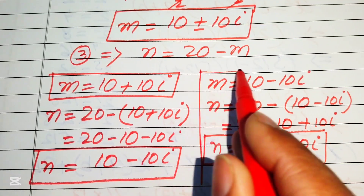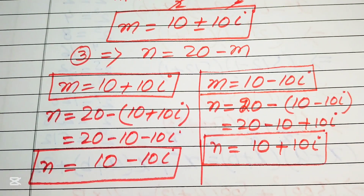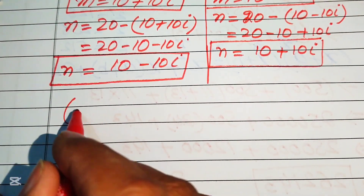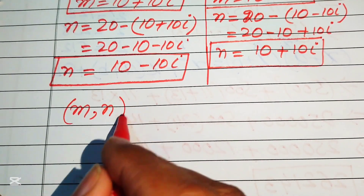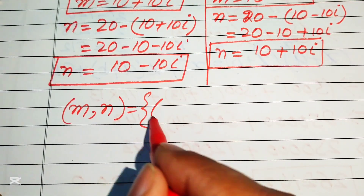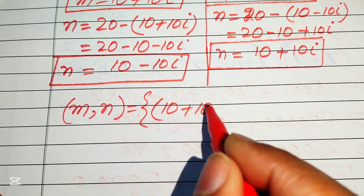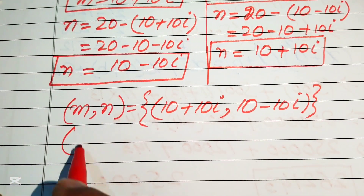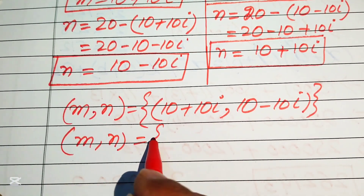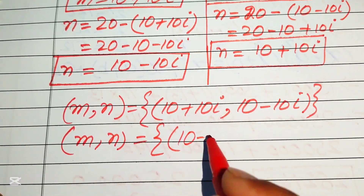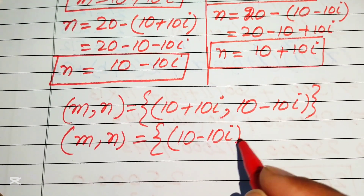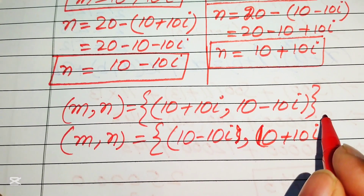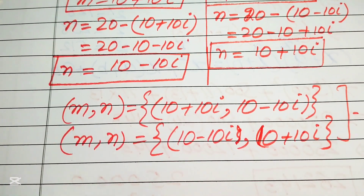So the two solutions are: first solution — m equals 10 plus 10i and n equals 10 minus 10i; second solution — m equals 10 minus 10i and n equals 10 plus 10i.